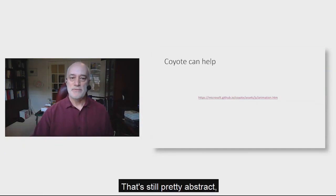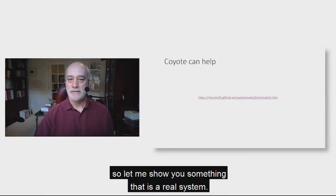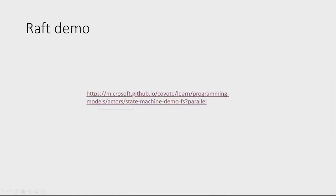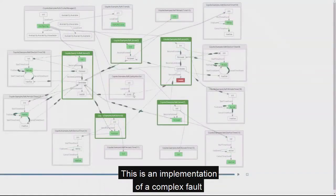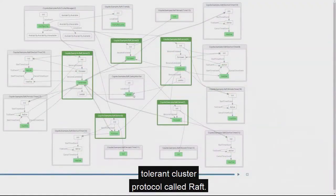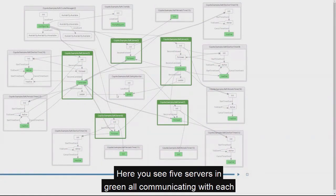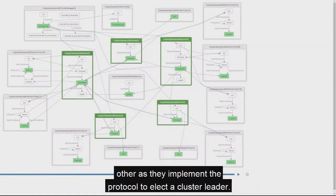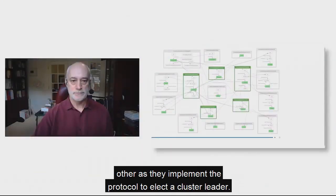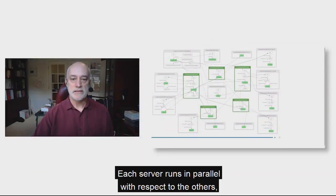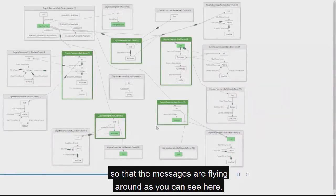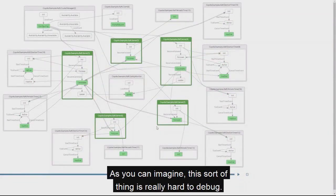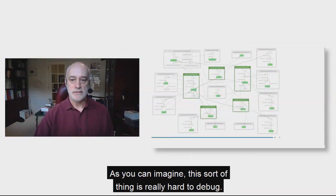That's still pretty abstract, so let me show you something that is a real system. This is an implementation of a complex fault-tolerant cluster protocol called Raft. Here you see five servers in green all communicating with each other as they implement the protocol to elect a cluster leader. Each server runs in parallel with respect to the others, so messages are flying around. As you can imagine, this sort of thing is really hard to debug.